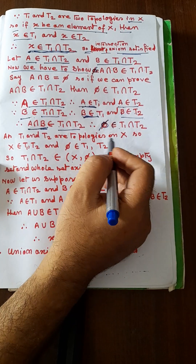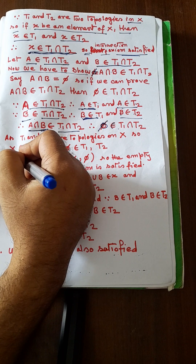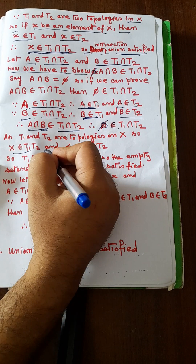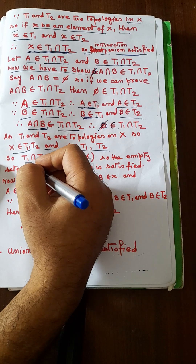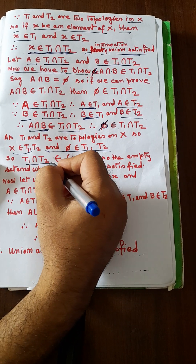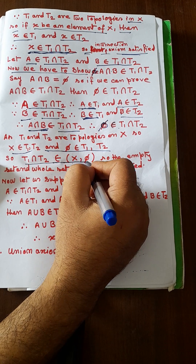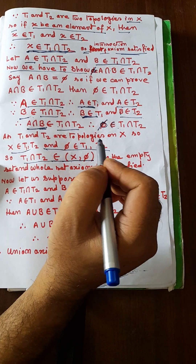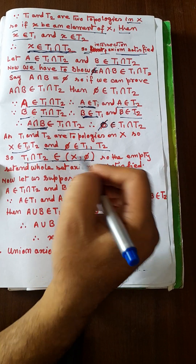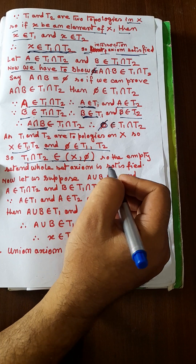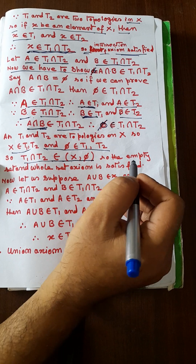Since T1 and T2 are two topologies on X, X belongs to T1 and T2, and φ belongs to T1 and T2. So T1∩T2 contains both X and φ, meaning the empty set and whole set axiom is also satisfied.